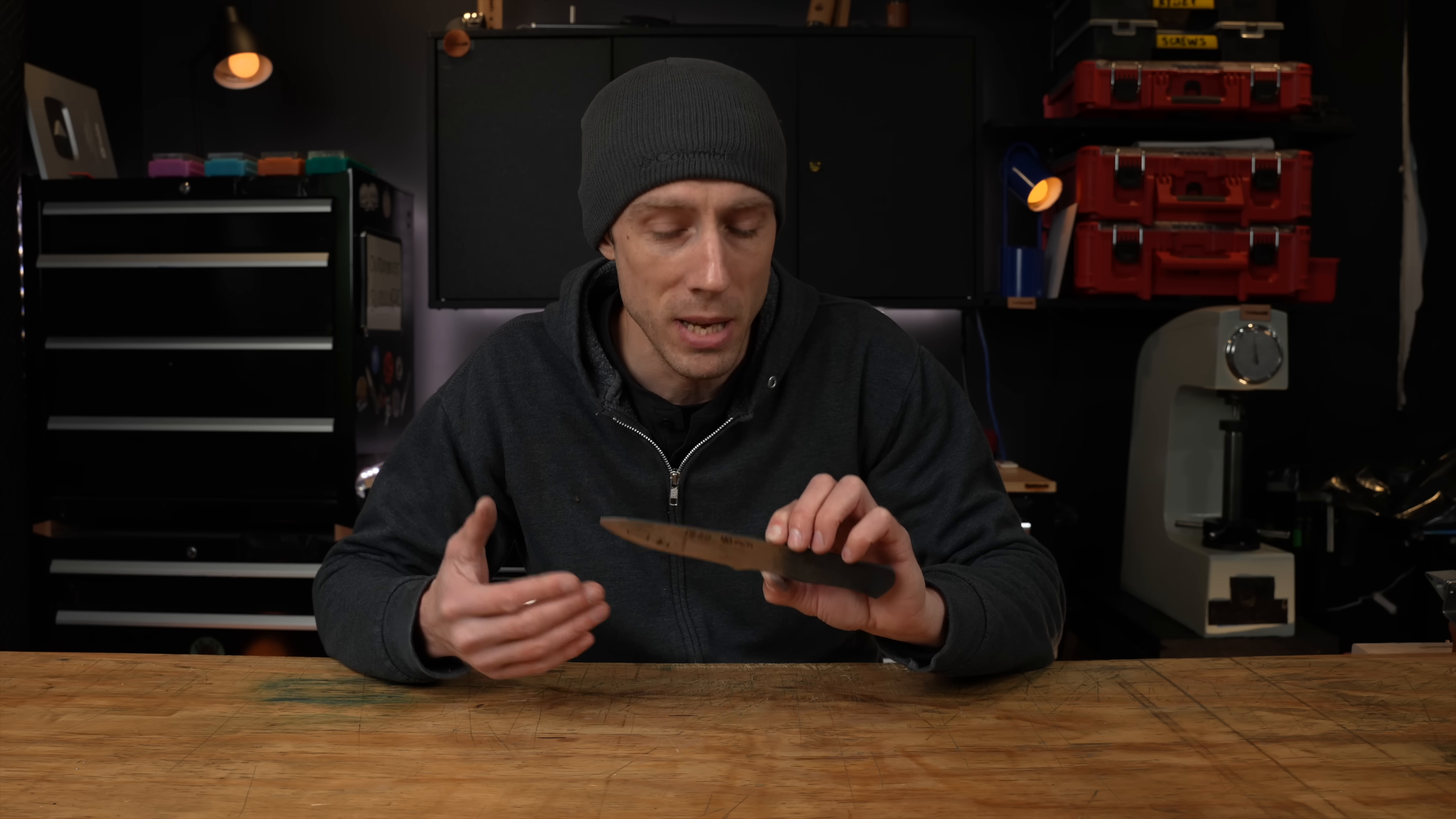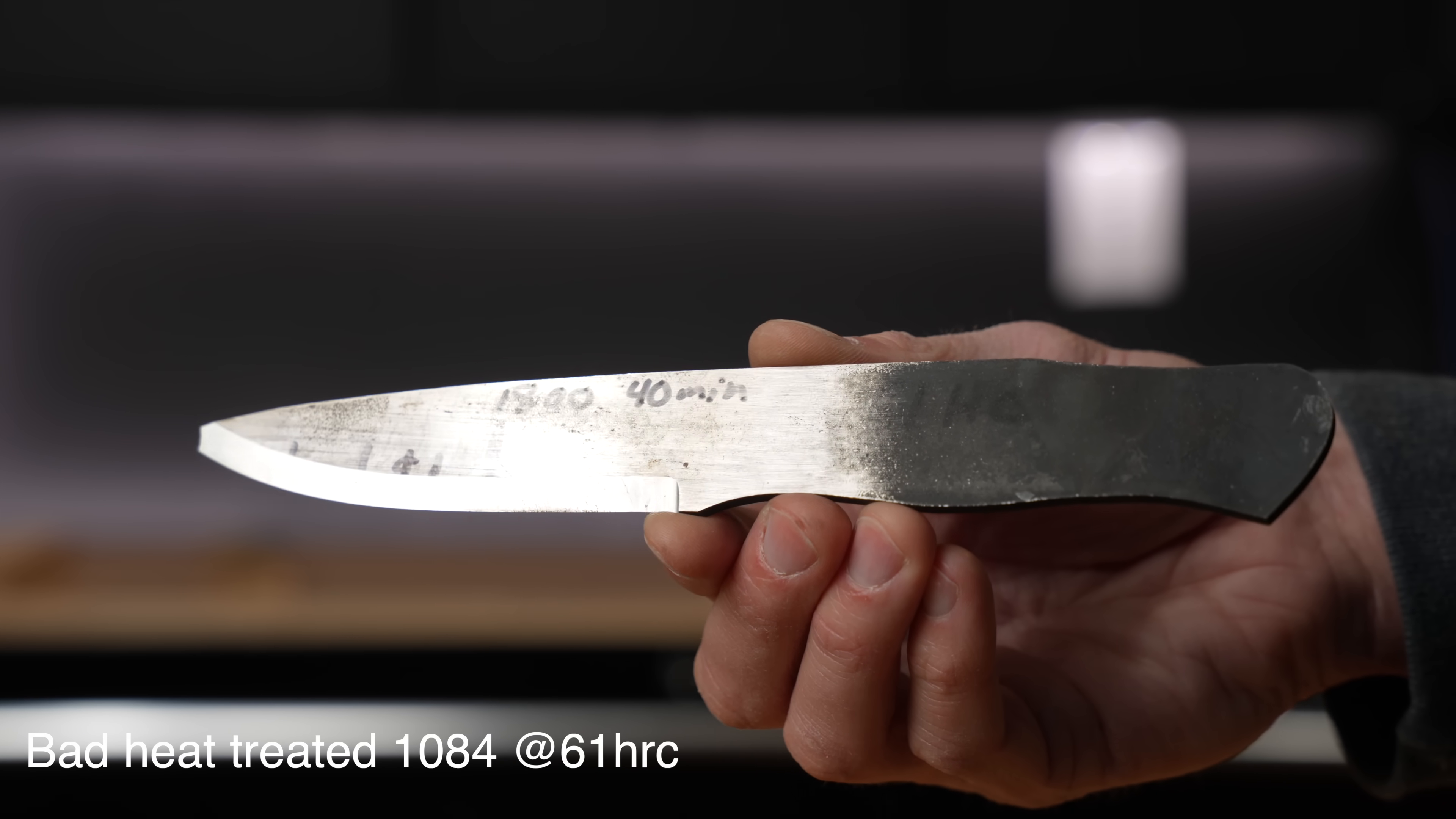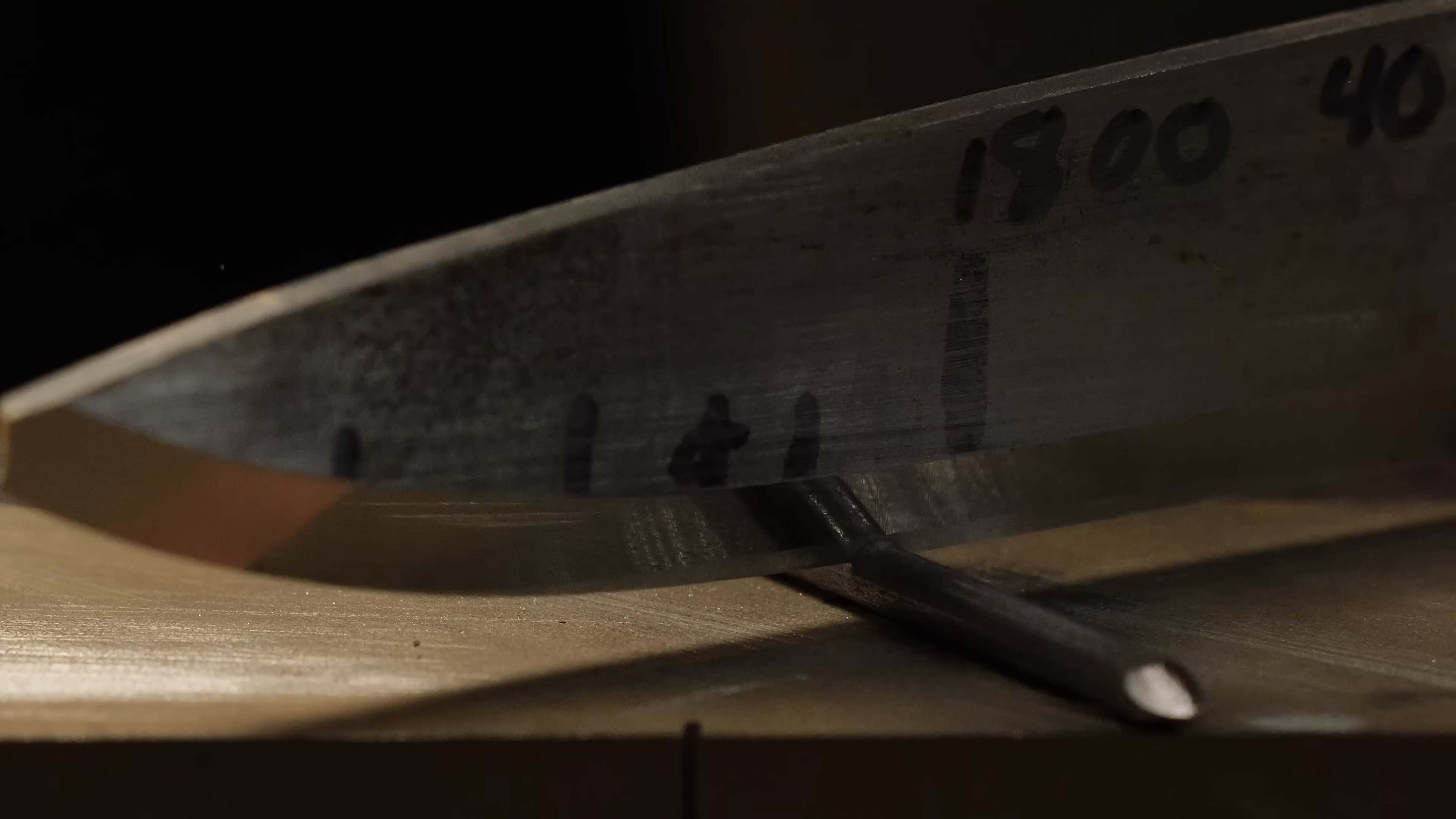What if we take a knife with a known bad heat treatment? Can we also manipulate the results by manipulating the geometry? Enter our badly heat-treated knife. This is 1084 steel that was way overheated for a significant amount of time during austenitizing. It's soaked at 1800 degrees for precisely 40 minutes before quenching. Now I did a video on this knife and I'll link it below comparing good versus bad heat treatments on knives. Definitely go check out that video. But let's do the same thing here. We'll put a 20-degree secondary bevel on the knife and hammer it through a nail.